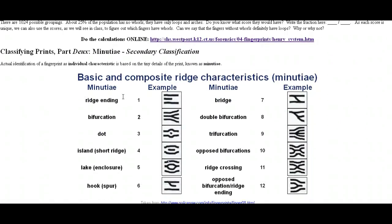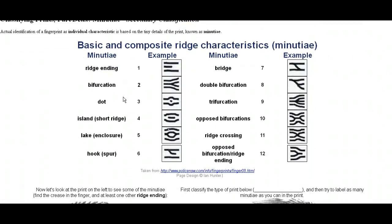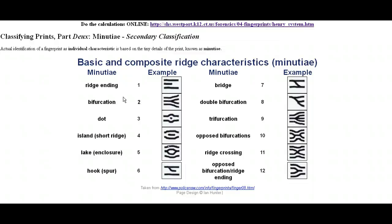But this is what I really wanted us to focus on, and that would be minutiae. This is secondary classification. The first step is determining whether it's a loop, an arch, or a whorl and what type it is. Secondary classification is finding the minutiae.